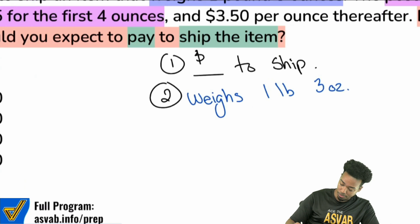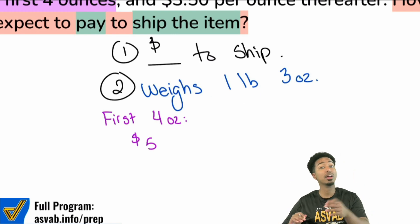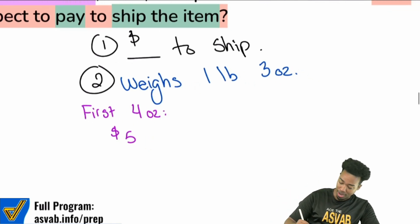So weighs one pound and three ounces. And then it says over here, hey, post office, it charges five dollars for the first four ounces. So let's write that down over here. The first four ounces, that's going to end up being again five bucks no matter what. The first four ounces, five bucks. Then after that, after four ounces, we're doing three dollars and fifty cents per ounce.